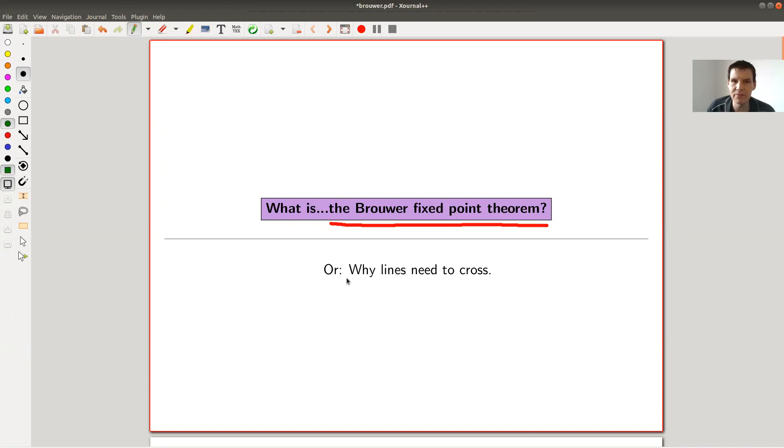And the point is, it will be kind of a generalization of something all of you know: that two lines from two different directions, from left to right - I would like to draw a green line from left to right, and I need to draw a red line from bottom to top. And no matter what I do, as long as those lines are reasonably well behaved, they need to cross, whatever I do.